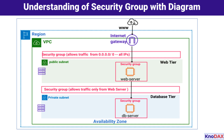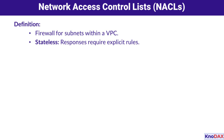Some key takeaways: security groups act as stateful firewalls at the instance level — if a request is allowed, its response is automatically permitted. Using security groups as a source provides scalability; when you add new web servers, you don't need to update the database security group manually. Always apply the principle of least privilege, allowing only the required traffic and blocking everything else. Security groups control inbound and outbound traffic at the instance level, offering both flexibility and protection.